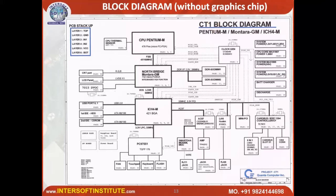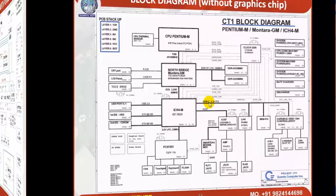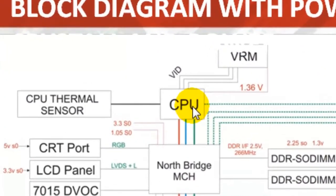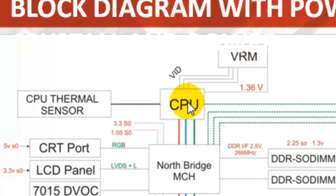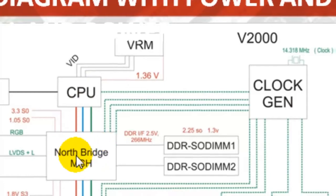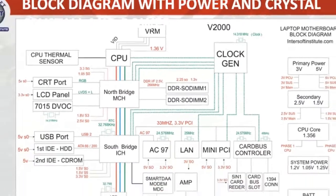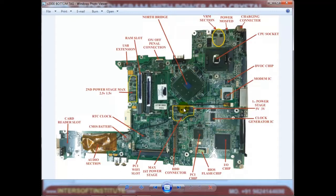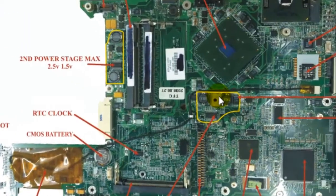This is the DV1000/V2000/M2000 motherboard block diagram. The CPU has a VRM section and CPU thermal sensor. The VRM section supplies power to the CPU as required. The clock generator also provides frequency to the CPU. The north bridge is a big IC located near the CPU and is connected with the CRT port. To understand the board, you must first identify the components.